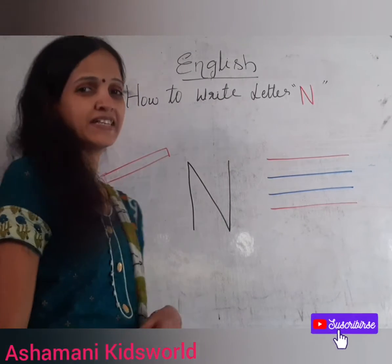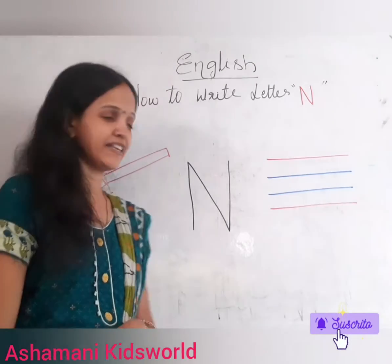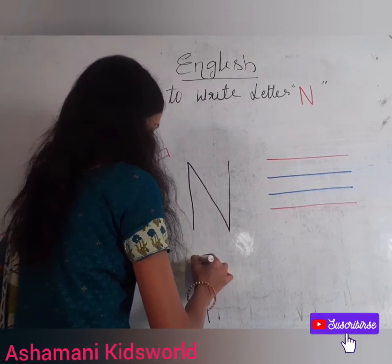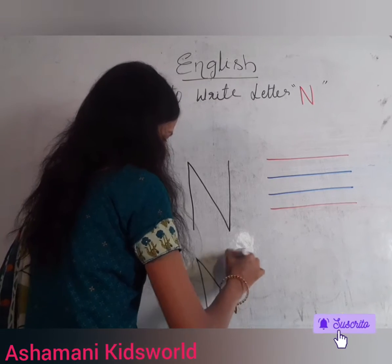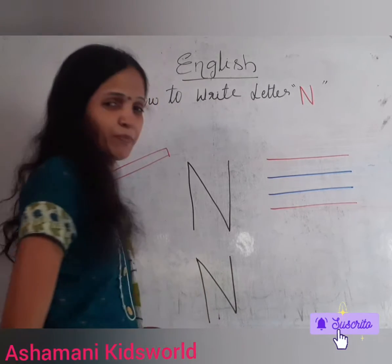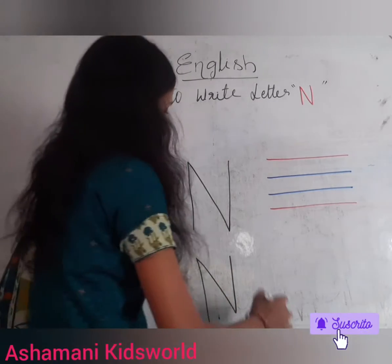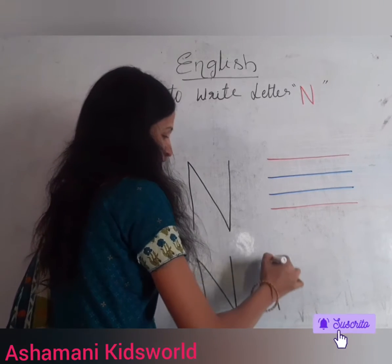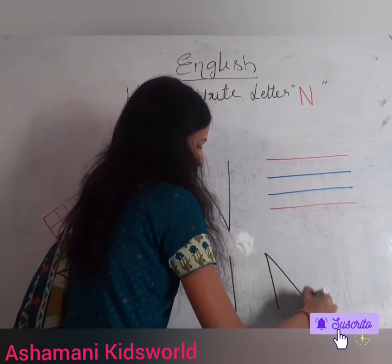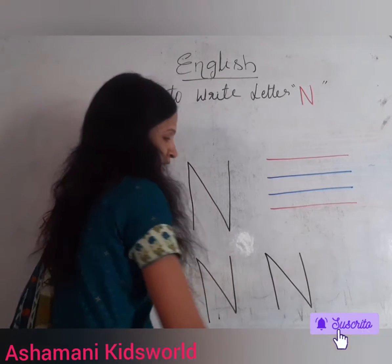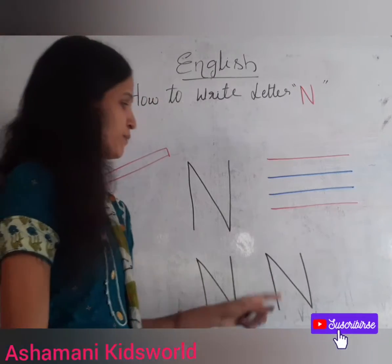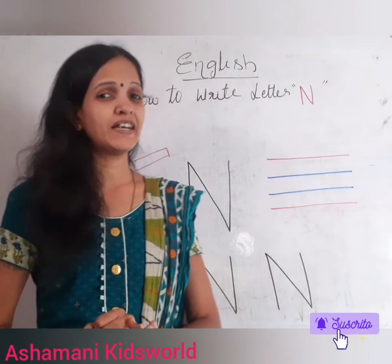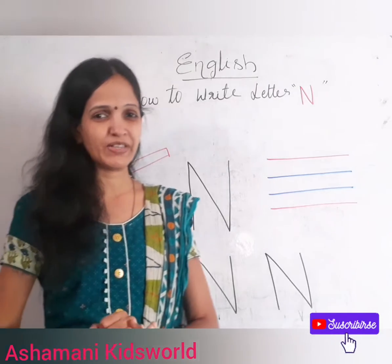This is letter capital N. Standing line, slanting line and go up. Capital N. Standing line, slanting line, and this standing line makes the letter capital N. Got it everyone?